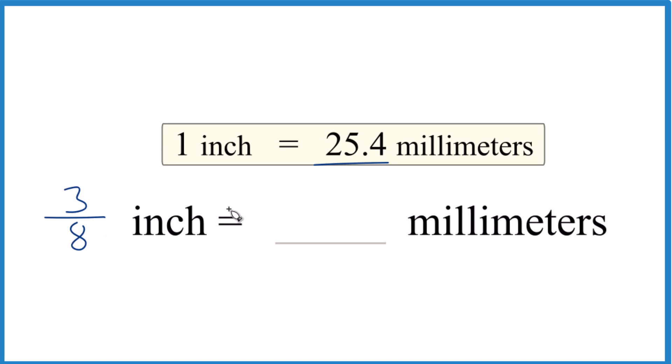So essentially what we do is we take the number of inches, multiply that by 25.4, we get our millimeters.